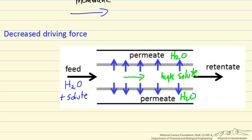So the flux of water through the membrane is going to be higher at the inlet than at the outlet, because we have a higher concentration of water on the feed side at the inlet than we do further along. Both of these things will decrease the amount of water we obtain for a given feed pressure in reverse osmosis.